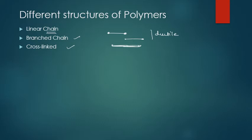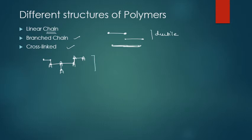When we talk about branched chain polymers, the main linear chain can have additional branches coming off it. Because they are branched, when heated they cannot flow as easily — they are stronger than linear chain polymers and have a higher melting point.